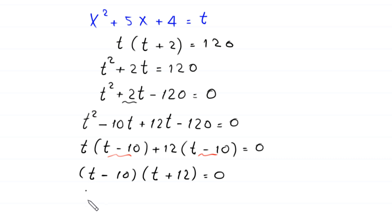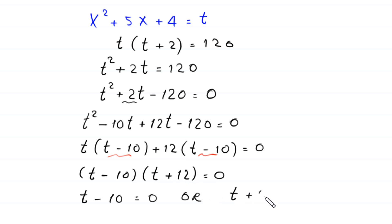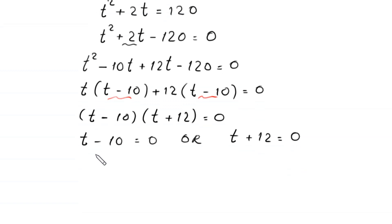From here, either t−10 = 0 or t+12 = 0. From the first equation we get t = 10, and from the second equation we get t = −12.